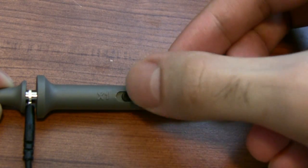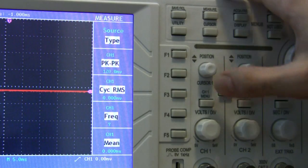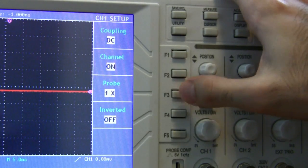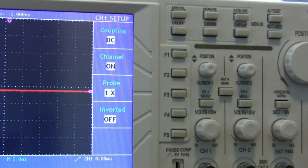All oscilloscope probes will have a little attenuation switch where you can set them to X1 or X10 attenuation. 99% of the time you just want to leave it set to X1. The X10 setting just divides the signal by 10, which you usually don't want to happen unless you're working with high voltages.